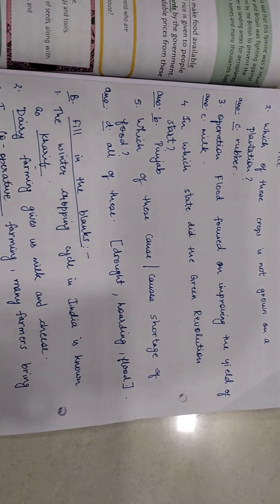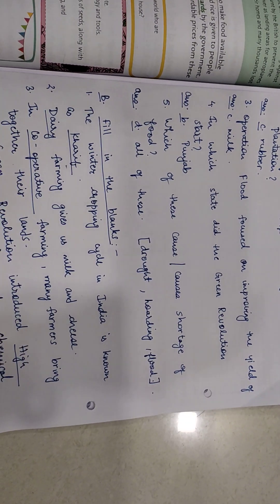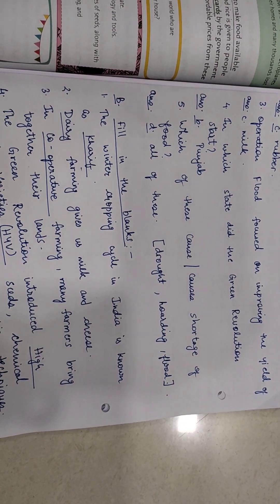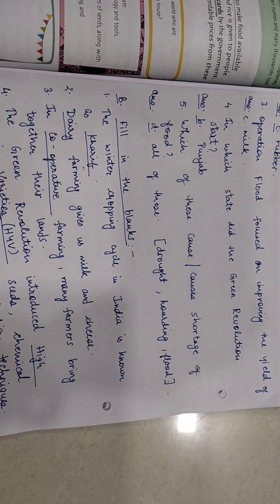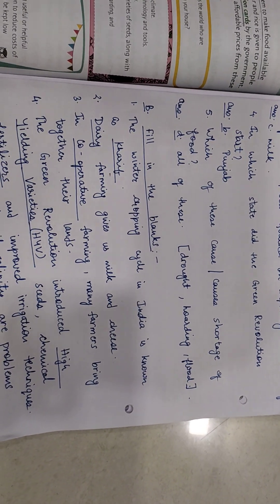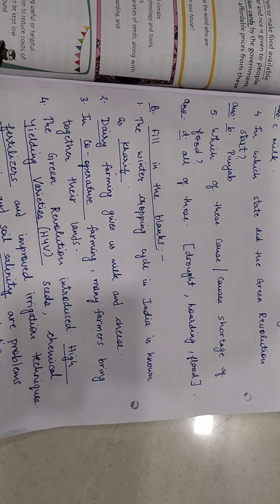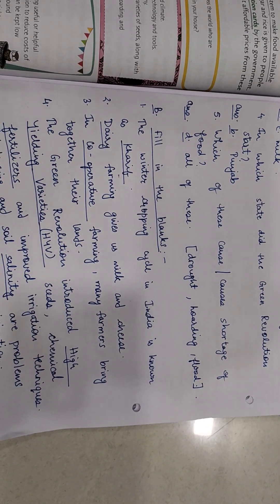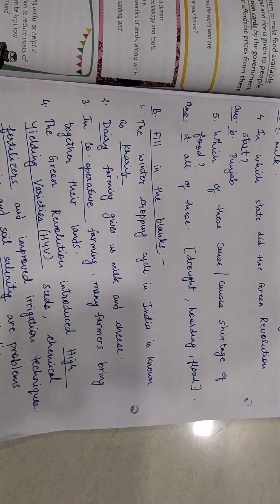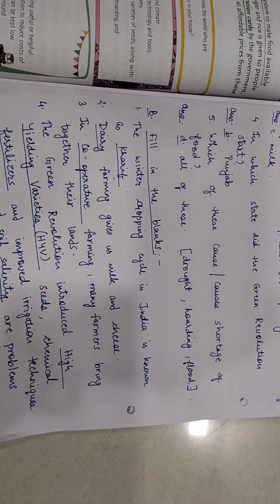B, fill in the blanks. First: the winter cropping cycle in India is known as — answer is Kharif. Second: dairy farming gives us milk and cheese — answer is dairy.